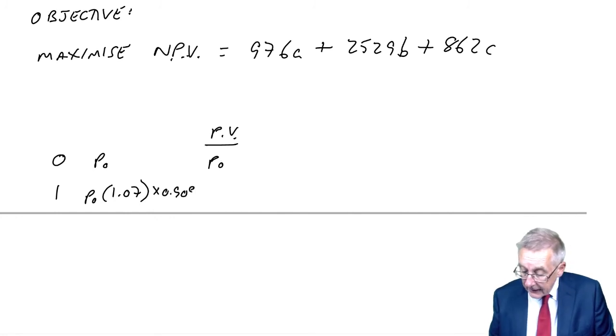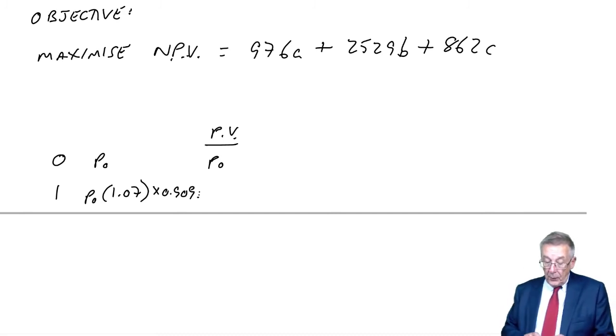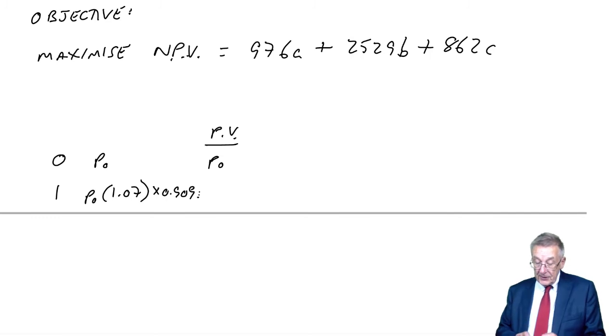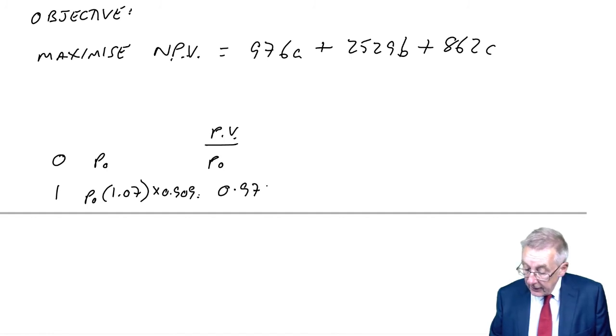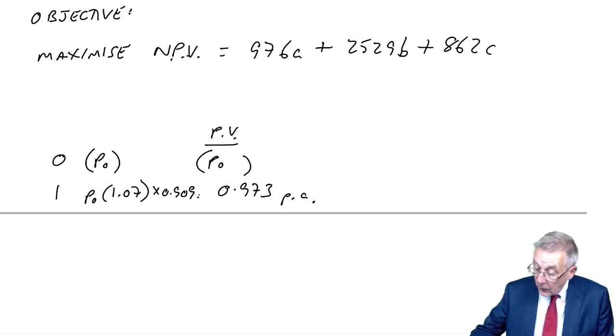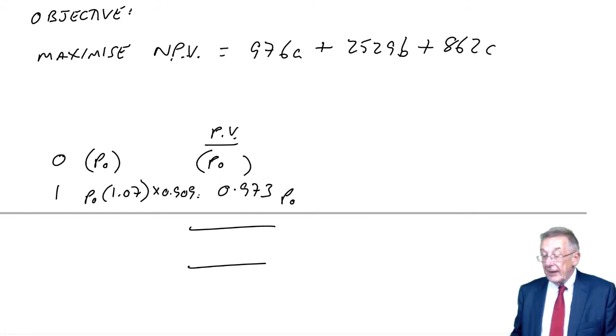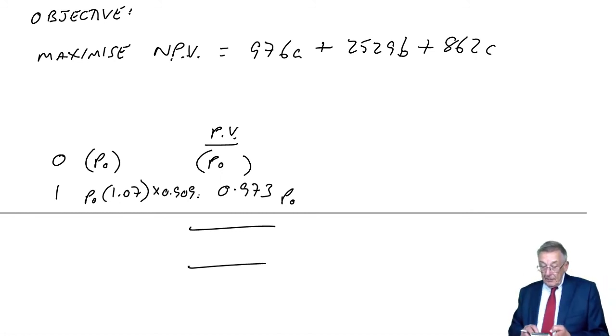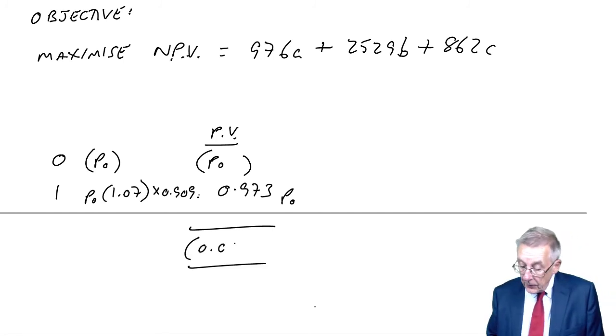P0 times 1.07 times 0.909. It comes to 0.973 P0. So we're investing P0, we're getting back 0.973 P0. So the net present value is 1 minus 0.973, which is 0.027 P0 negative. I said right from the beginning that you are losing money on this. Borrowing at 10, investing at 7.